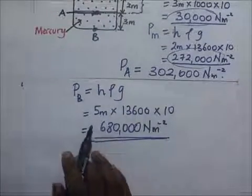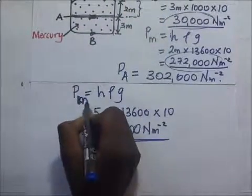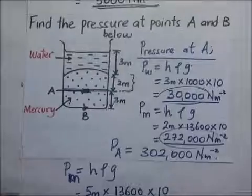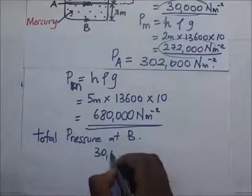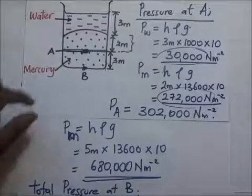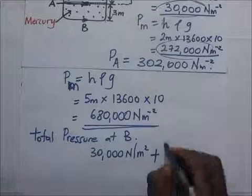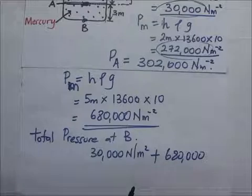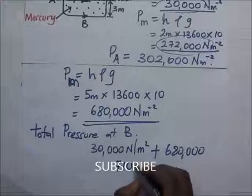The total pressure at point B is the pressure from the water column plus the pressure from the mercury column: 30,000 + 680,000 = 710,000 N/m².